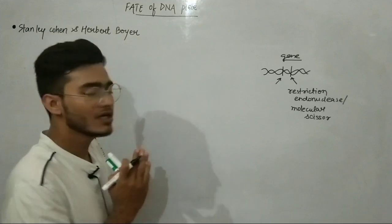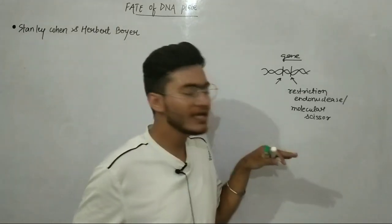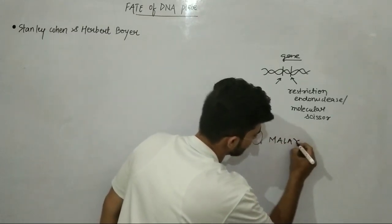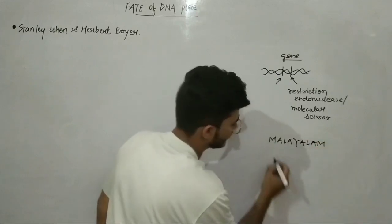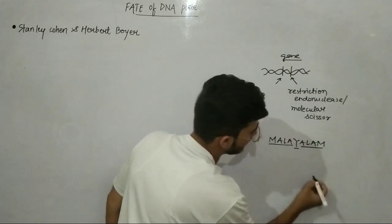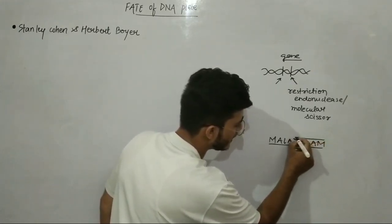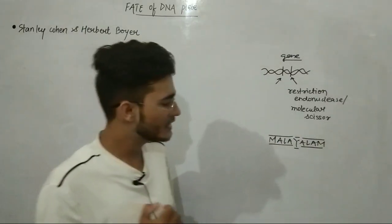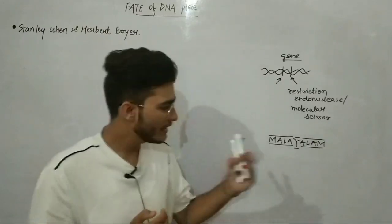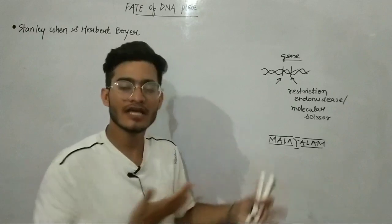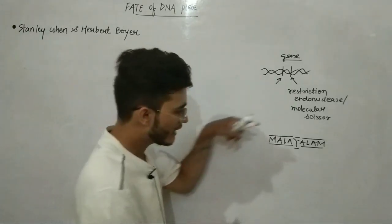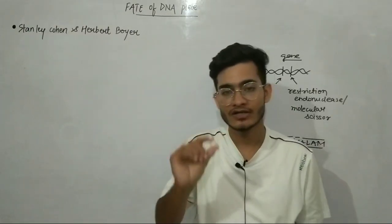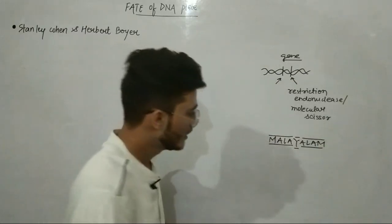What are palindromic sequences? These are sequences which can be read in the same way on both strands. For example, you have the word Malayalam. If you read it in the opposite direction, M-A-L-A-Y-A-L-A-M, Malayalam is a palindromic word. Similarly, your nucleotide sequences if they are read in different directions in the same way, you call them palindromic sequences.